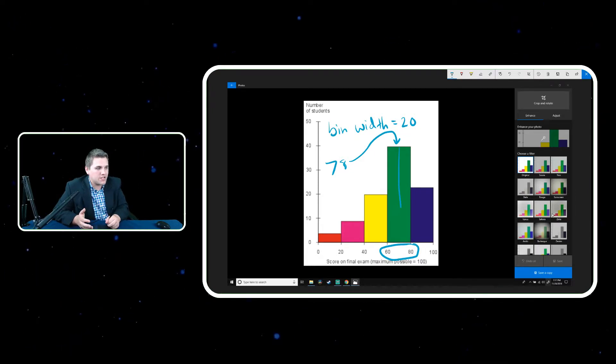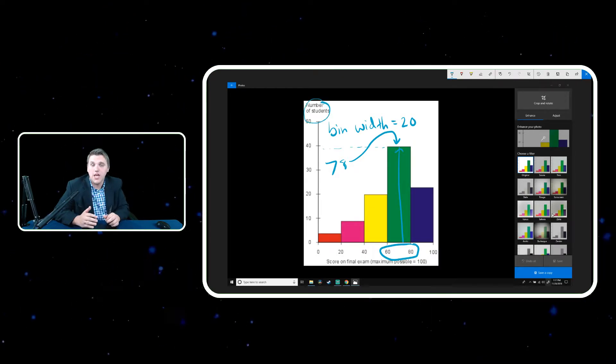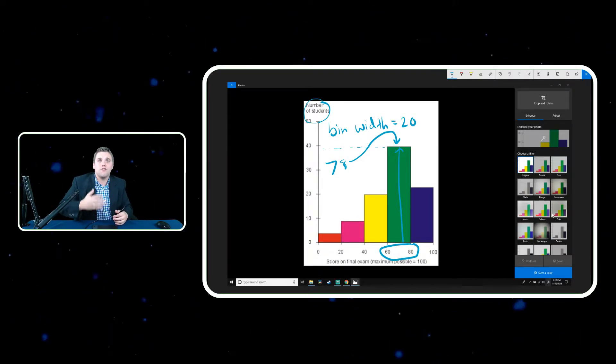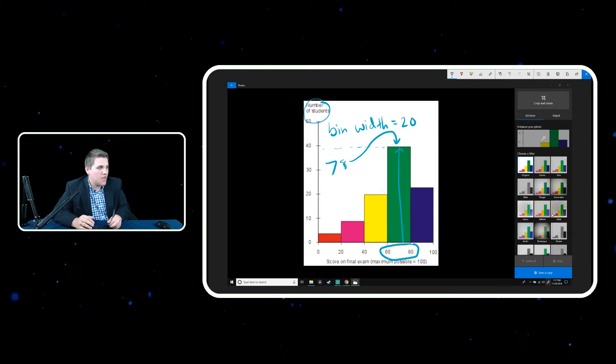And again, the height of this bar is represented by a frequency, or in this case, the number of students. If you remember, frequency is the number of observations that is seen for one particular data point. In this case, we're talking about a frequency of a range of numbers, so between 60 and 80.